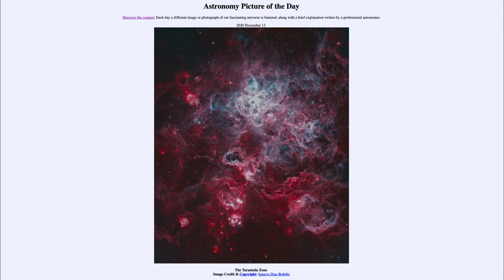To illustrate how big this actually is: we often look at images of the Orion Nebula, which is a great nearby star-forming region with similar processes. However, were we able to move the Tarantula Nebula to the same distance as the Orion Nebula, the Tarantula Nebula would fill half the sky instead of just a tiny portion of one constellation — giving some perspective as to how large this object actually is.